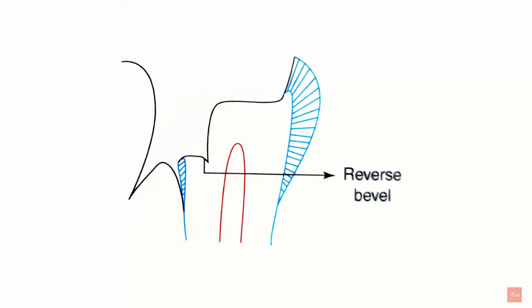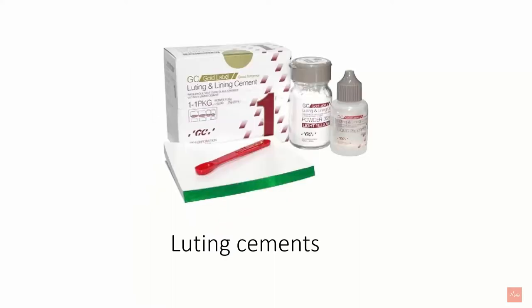Next is reverse bevel. First, let's understand what bevel means — a bevel is a plane of the cavity wall or floor which is directed away from the preparation. So a reverse bevel is placed on the gingival side, directed towards the axial wall of the cavity. This helps to lock the proximal portion of the restoration. The last secondary feature is luting cement — it flows into the spaces between the inlay and the tooth surface, filling irregularities and increasing retention.